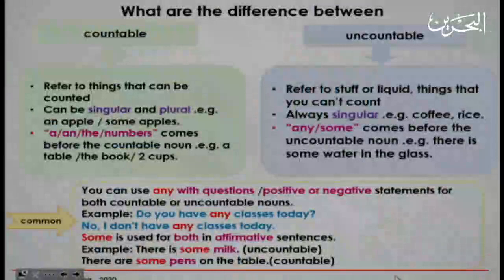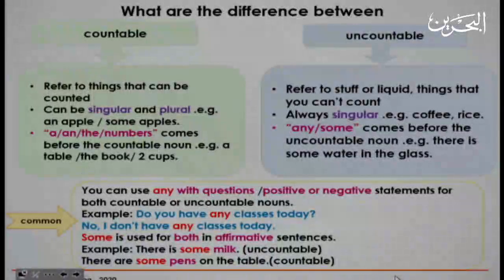'Some' is used for both countable and uncountable nouns in affirmative sentences. Example: There is some milk — uncountable. There are some pens on the table — countable.